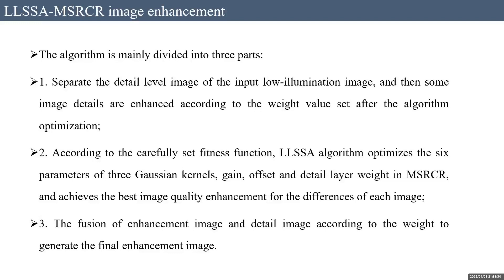The low illumination image enhancement method based on the adaptive MSRCR algorithm is proposed to address problems of the Retinex algorithm in processing low illumination images, such as the need to manually adjust parameters and blurred details. The algorithm is mainly divided into three parts. First, separate the detail layer image of the input low illumination image, then enhance image details according to weight values set after algorithm optimization. Second, according to the carefully set fitness function, the LLSSA algorithm optimizes the six parameters of three Gaussian kernels, gain, offset, and detail layer weight in MSRCR, achieving the best image quality enhancement for each image. Lastly, the fusion of the enhanced image and detail image according to weight generates the final enhanced image.